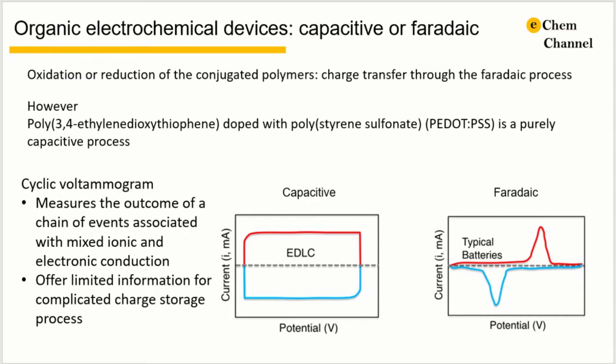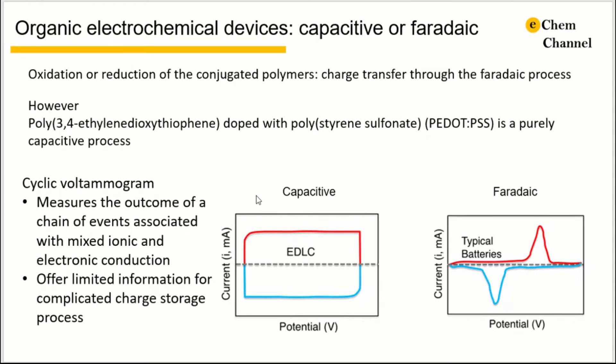Traditionally, conjugated polymers store charges by oxidations or reductions, and the charge transfer process is considered as faradaic. However, several recent studies show that the charge storage process is purely capacitive in poly(3,4-ethylenedioxythiophene) doped with polystyrene sulfonate, or PEDOT:PSS. Is it just an exception? In our previous tutorials, we showed that cyclic voltammograms can be a way to differentiate the capacitive and faradaic process.